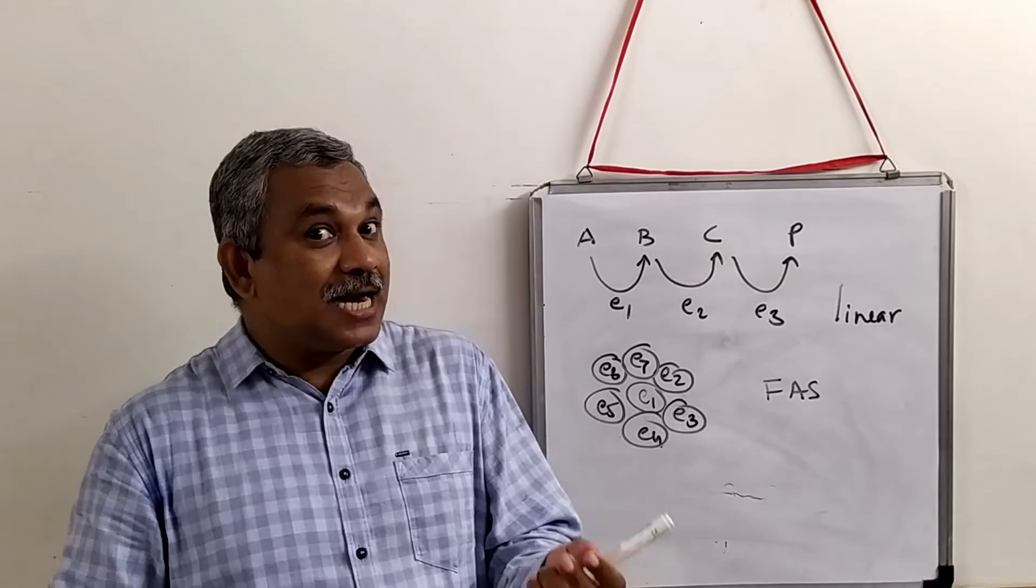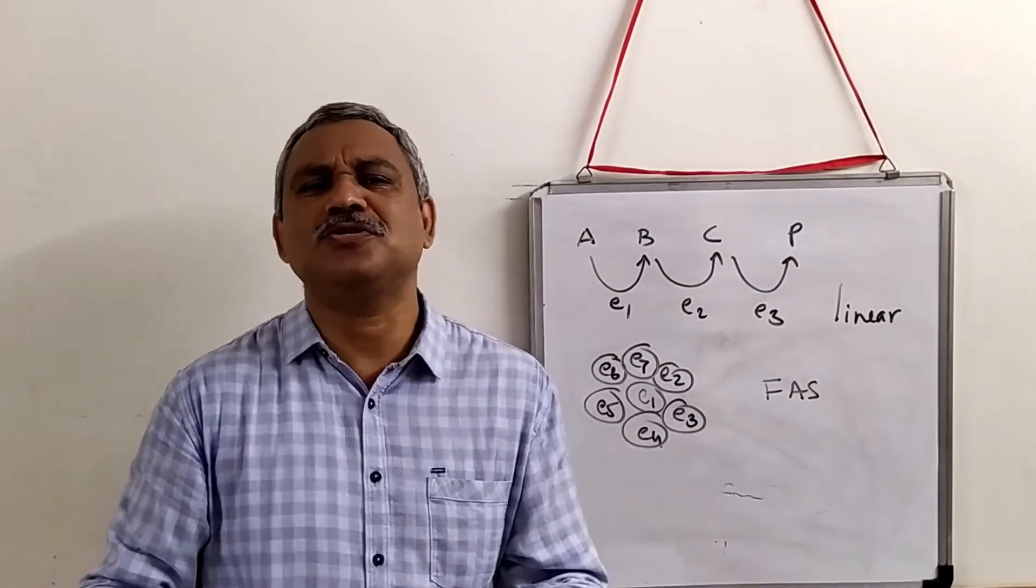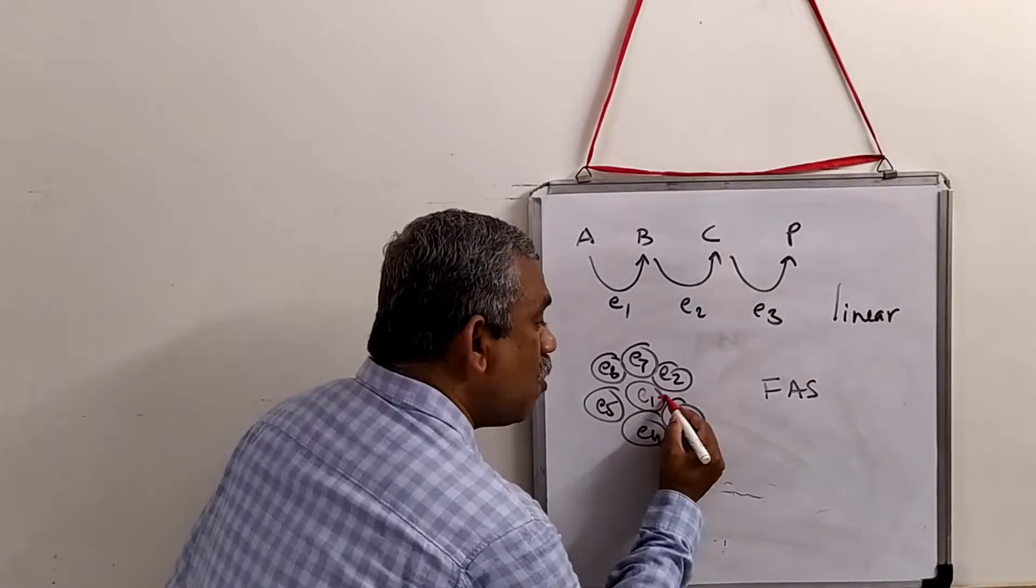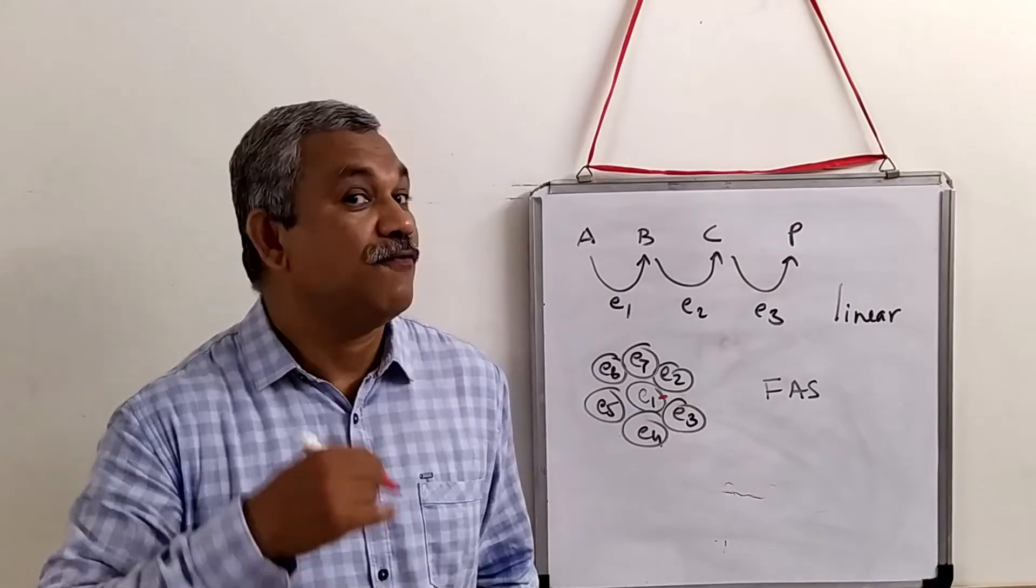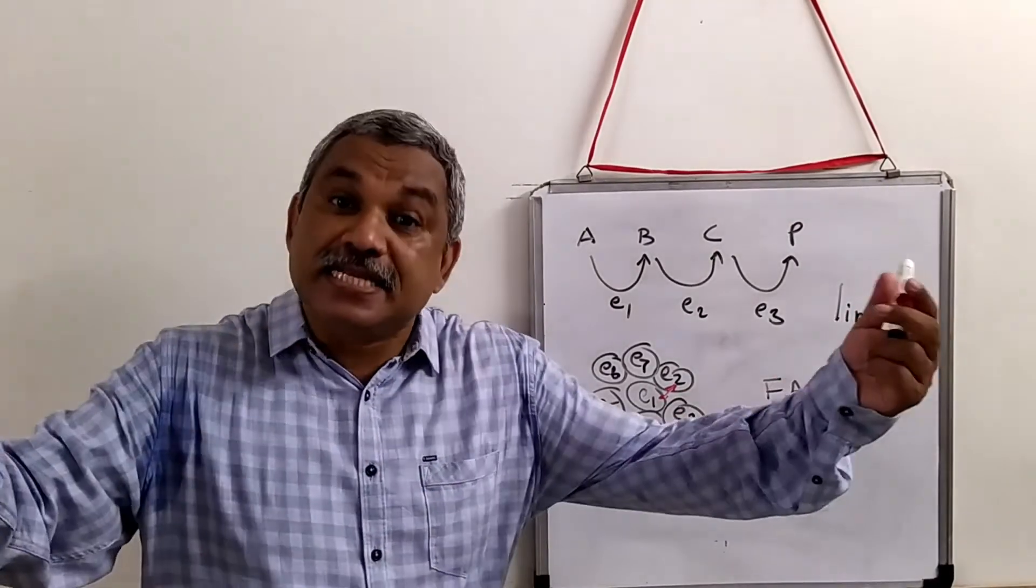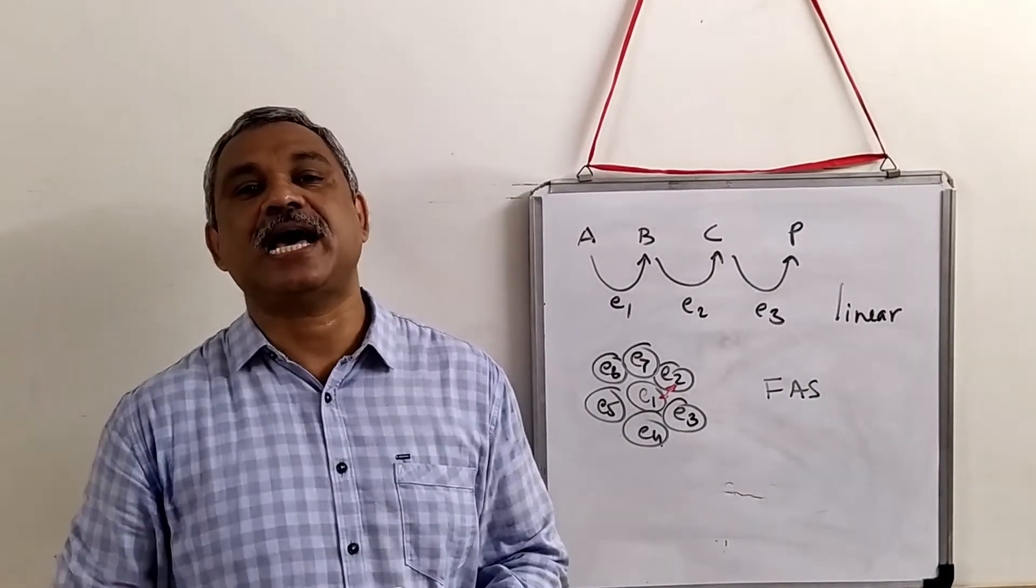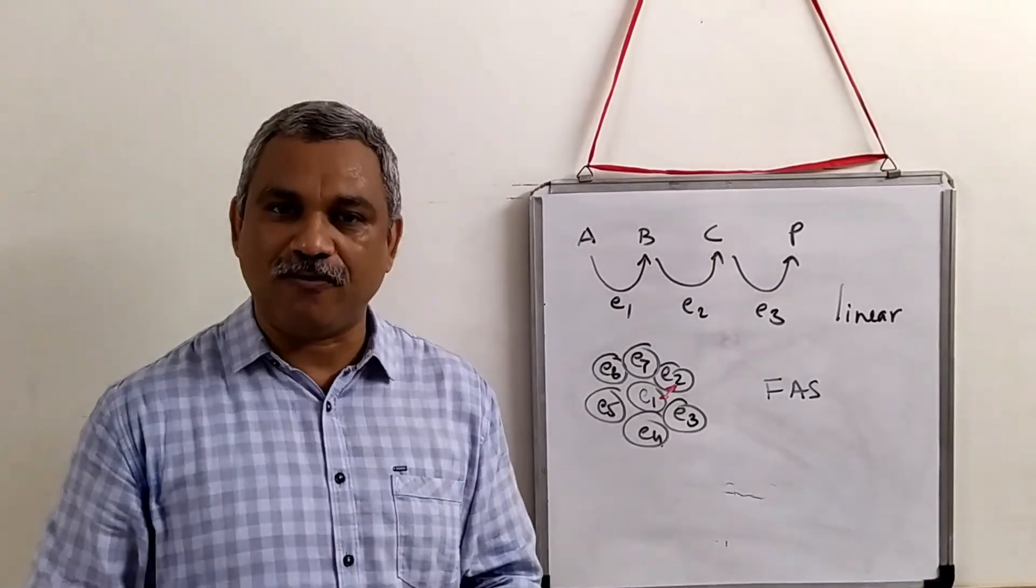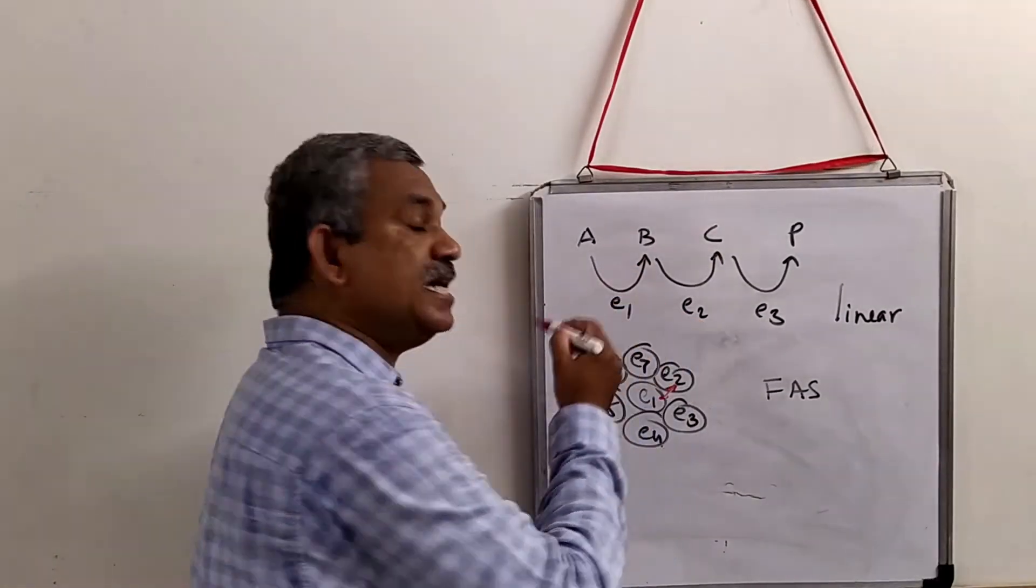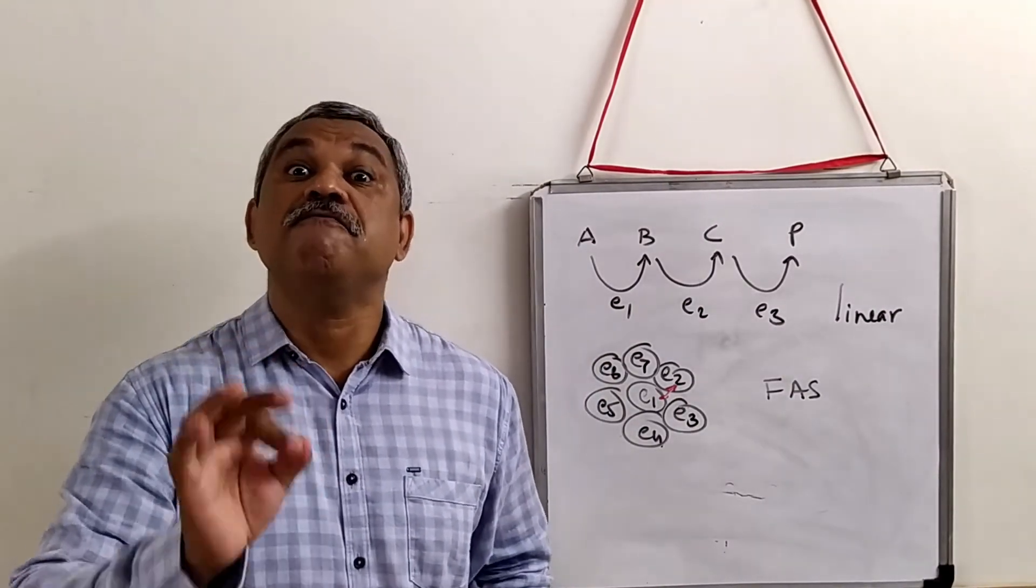What is the biggest advantage of this arrangement? The biggest advantage is all these enzymes are in close vicinity. So what happens is if a product is formed from E1, where should it go next? It should go to E2. If the enzyme is in close vicinity, directly it is given - there is no wastage that happens in the process of transferring an intermediate from one active site to the next active site. The enzyme becomes very efficient.